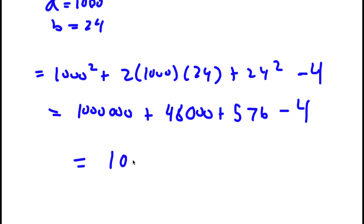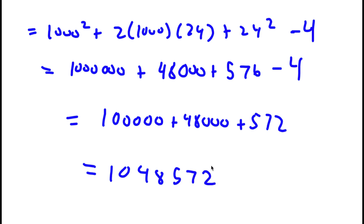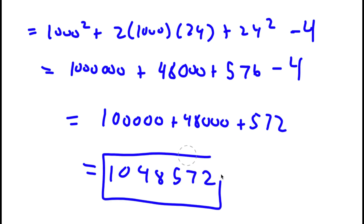So I have 1,000,000 plus 48,000 plus 572, and this equals 1,048,572. So this is my answer.